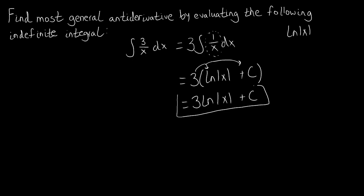So this is still going to be our general antiderivative for this function, and we just did a quick explanation about the nature of plus C in relation to these integration problems. This problem was a lot shorter than others in this section, because once we took the constant multiple of 3 out of the integral, we could anti-differentiate 1 over x as ln(x), knowing that the derivative of ln(x) is 1 over x. We used that property, and discussed how plus C is unaffected by constant multiples.